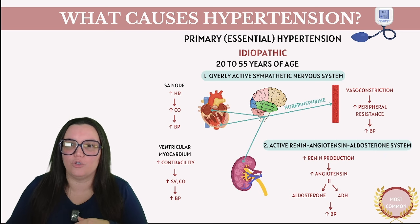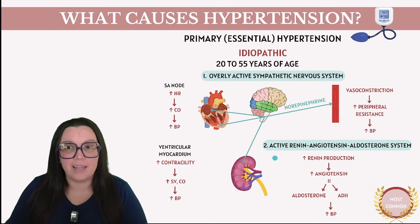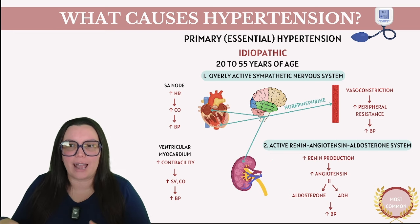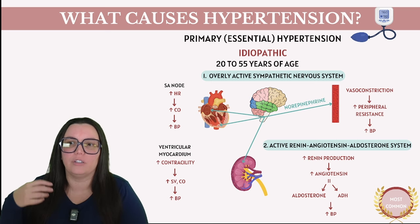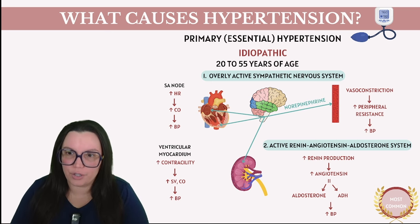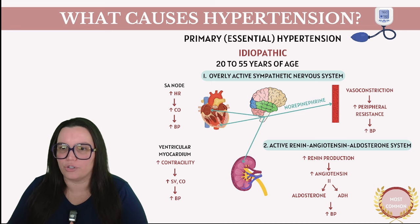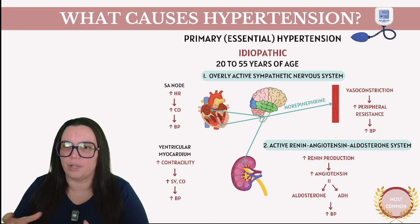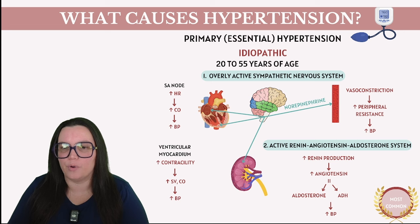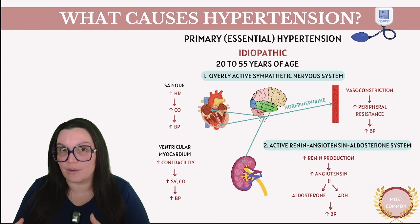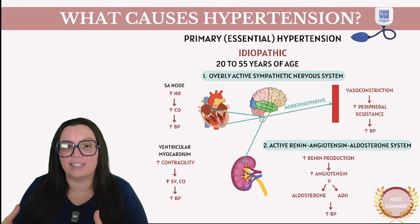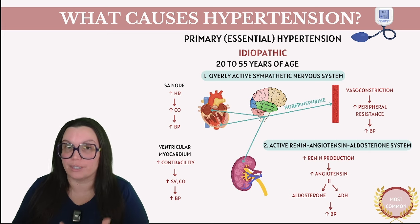Occasionally certain people exhibit an unusually active renin-angiotensin-aldosterone system, meaning the kidneys release renin in abnormally large quantities. An excess of renin production leads to increased angiotensin II, which subsequently stimulates aldosterone and ADH, increasing our blood pressure. So it's really important when looking at our patients to assess what's going on with their kidneys — are we seeing an excess of renin production due to an overactive renin-angiotensin-aldosterone system?